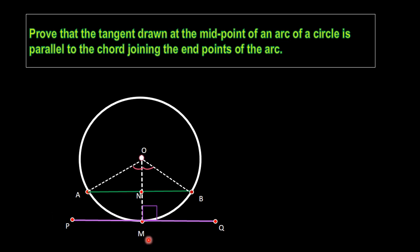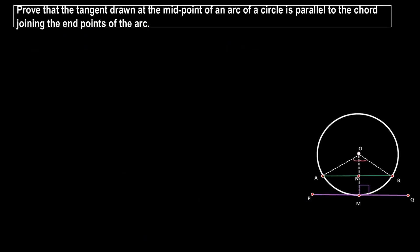We have to prove AB parallel to PQ using this figure. We will use the approach that if angle BOM equals angle OMQ — a pair of corresponding angles are equal — then AB is parallel to PQ. To show this, we first need to prove that angle ANO equals 90 degrees by proving the two triangles AON and BON are congruent.